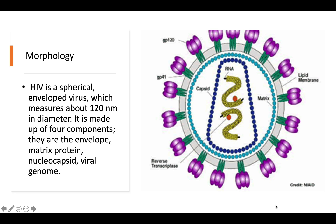The host cells are the CD4 cells present in the human body. During replication, the HIV takes the lipid bilayer membrane from the host cells — that is why it is called an enveloped virus. In some viruses there is no lipid bilayer, and those are called naked viruses. The diameter of this virus is about 120 nanometers.